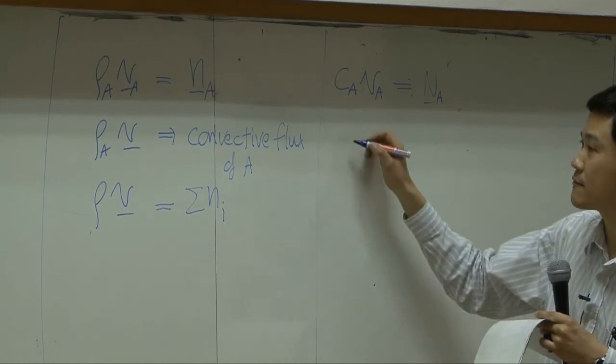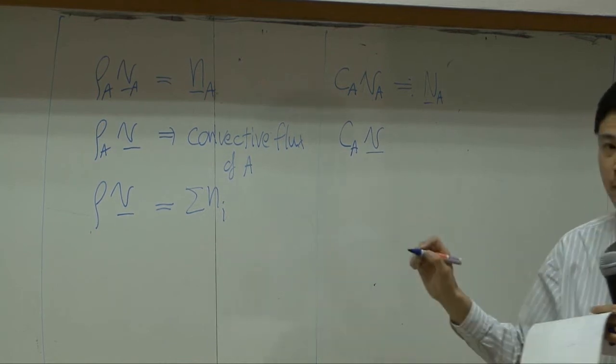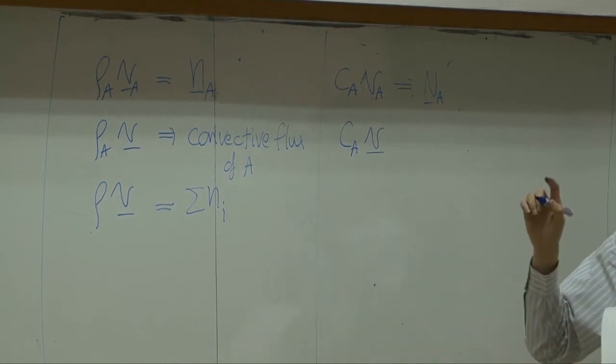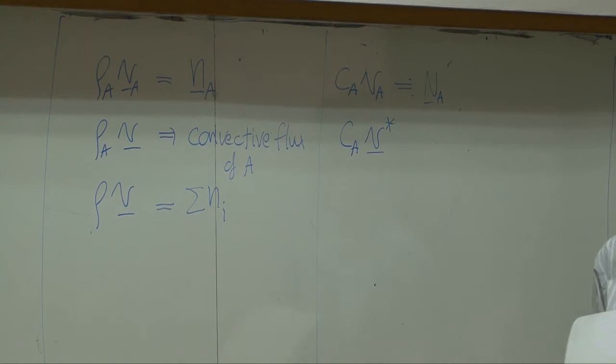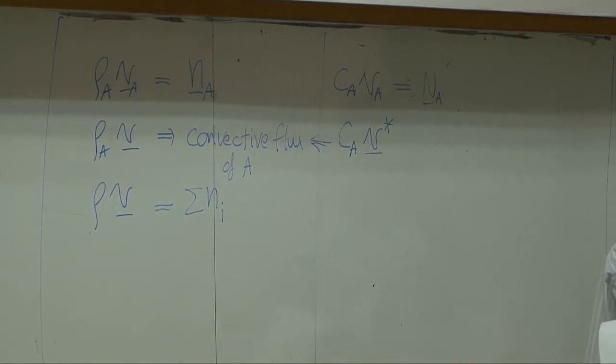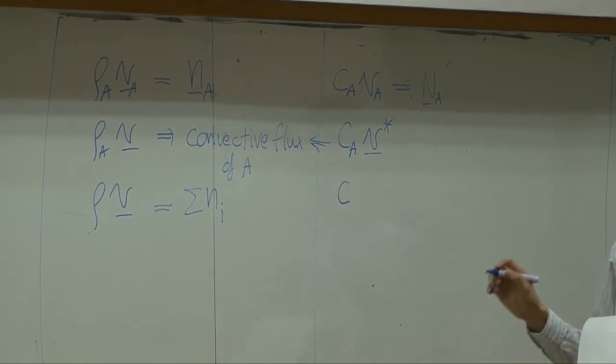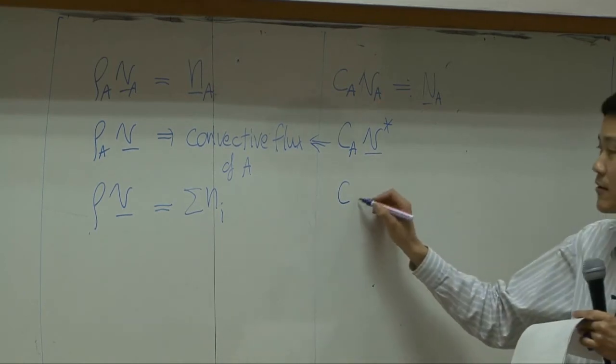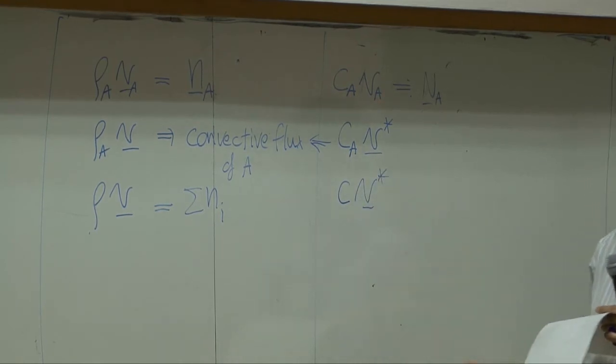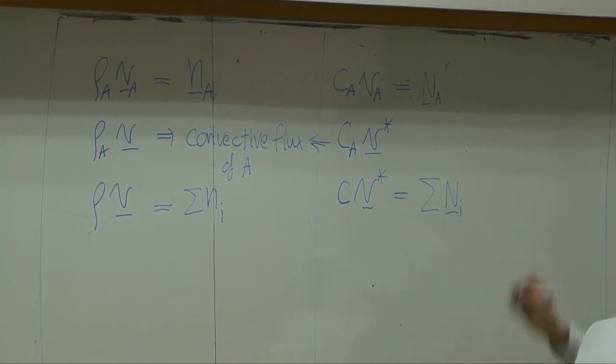For convective flux, we use C_A times average velocity. But in this case, average velocity is V star. So CAV star would be convective flux of A in molar basis. And then you have combined or total concentration multiplied by average velocity. That should equal to summation of combined flux.